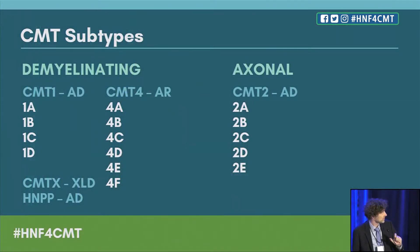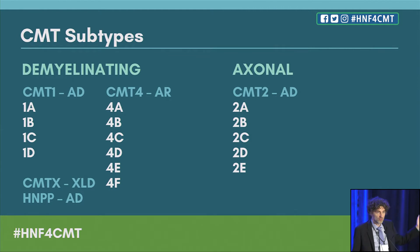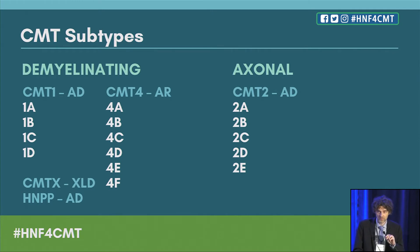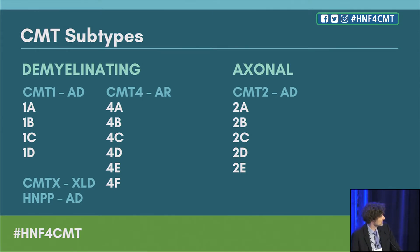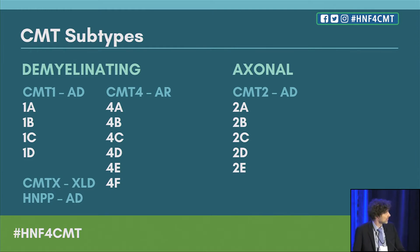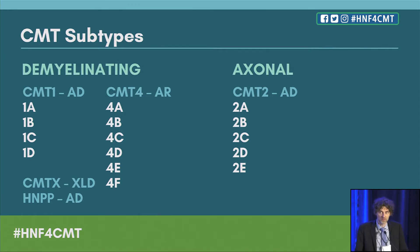On the left side of this table are demyelinating types of CMT. On the right side are the so-called axonal types. These are the two types Dr. Scheidt referred to, and below you see all these confusing numbers. The take-home message is there are many different genes that we have found over the years that can cause CMT. Every CMT patient has only one gene that has a problem — only one of these numbers characterizing what's going wrong with the DNA. It's a disorder caused by a single gene in a given patient.